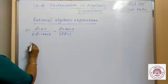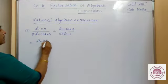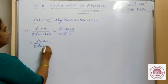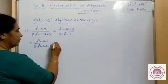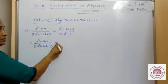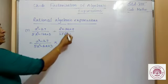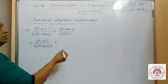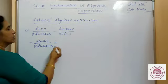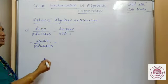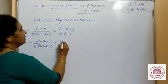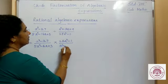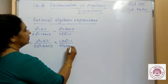This is equal to (a³ - 27) upon (5a² - 16a + 3) multiplied by — we are converting into multiplication by taking the multiplicative inverse or reciprocal of the second rational algebraic expression. That is, the denominator and numerator will interchange. So, (25a² - 1) upon (a² + 3a + 9).